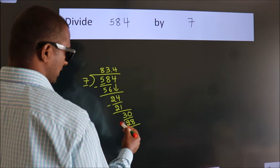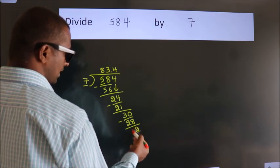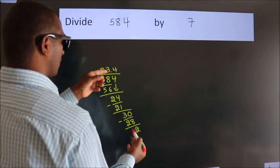Now we subtract. We get 2. After this, we already have the decimal, so directly take 0.